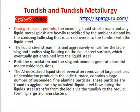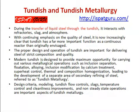Both reoxidation and slag entrainment generate harmful metal oxide inclusions. The aluminum-deoxidized liquid steel, even after removal of large particles of the oxidation product in the ladle furnace, contains a large number of suspended fine alumina particles. These particles are prone to agglomerate due to turbulent liquid steel flow during the steel transfer from the ladle via the tundish to the mold, forming large alumina clusters. During the transfer of the steel through the tundish, it interacts with refractory slags and fluxes. With continuing emphasis on the quality of steel, it is now increasingly clear that the tundish has a far more important function as a continuous reactor.